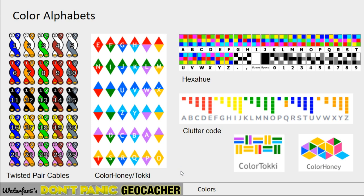Colors can also be used as a cipher, kind of like an alphabetical cipher. Twisted pair cables — a real system used for wiring — have color combinations for their wires, and the colors each have a unique number. Ideal for puzzles, but also convertible to letters, since with 25 of them, almost all letters of the alphabet can be mapped.